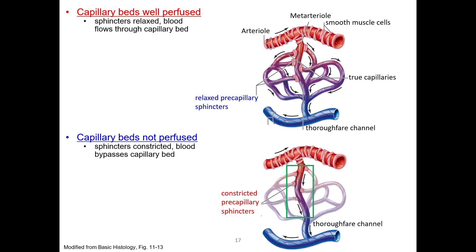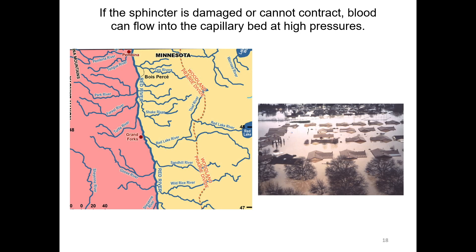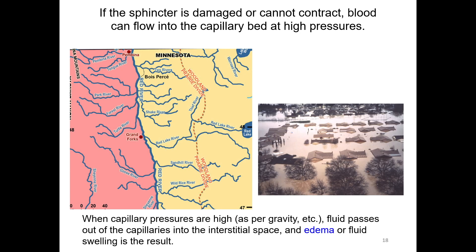This system allows for very rapid responses. However, lack of control of blood flow can have serious consequences. Think of it like rivers with dams — dams that allow control of water flow into various regions or side channels. Loss of those dams, or loss of control of them, can result in too much water flowing into local channels and flooding. Similarly, if the sphincters are compromised or too much blood flows into the capillary bed, this results in high capillary pressure, and fluid will pass out of the capillary into the interstitial space. If the lymphatic system cannot accommodate the fluid, edema can result.